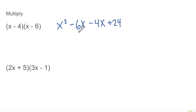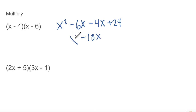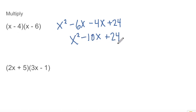Then we have two like terms — two x terms — so we can combine those. Negative 6x and negative 4x gives us negative 10x. And we have our x squared term and the plus 24. So that's what we get when we multiply out these two binomials using FOIL: x squared minus 10x plus 24.